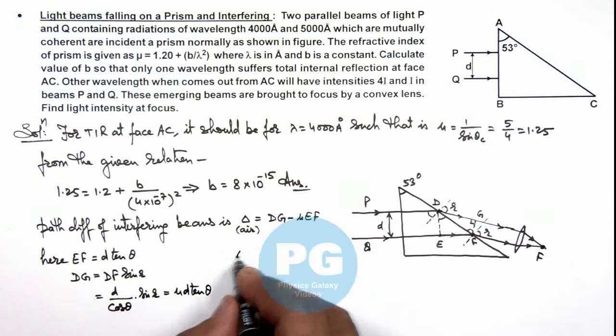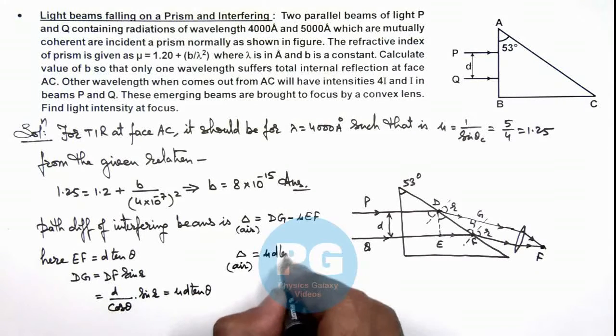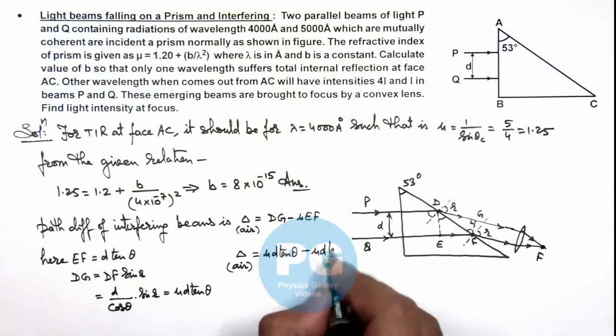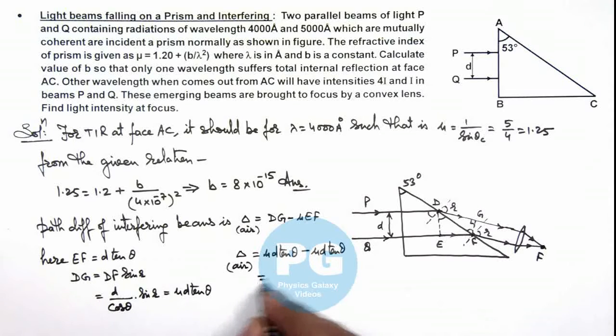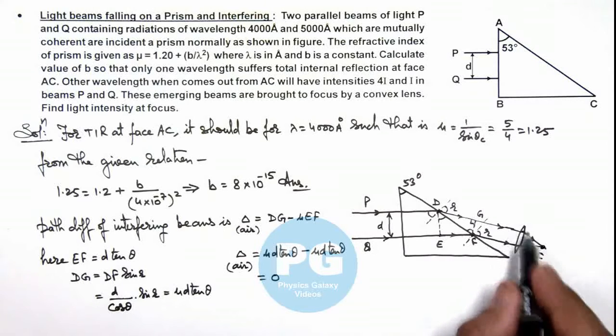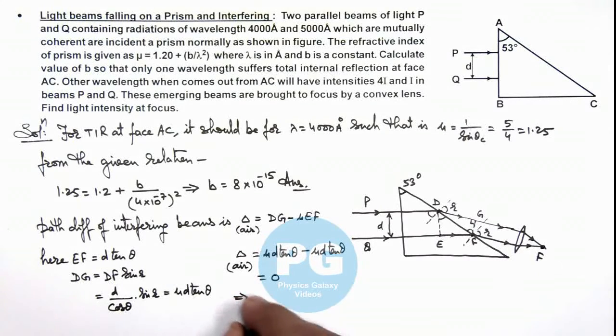So if we calculate this Δ here, we can write it μd tan θ which is DG minus μ times EF is again μd tan θ. So the path difference we are getting is zero. That means at focus light beams will interfere constructively. So we can write as this zero, we can write light beams interfere at F constructively.